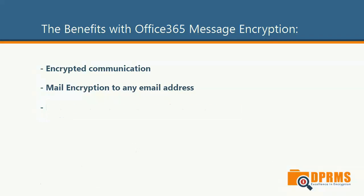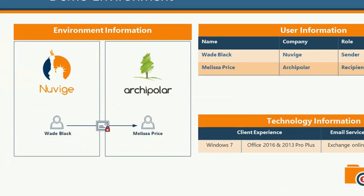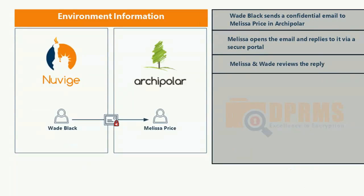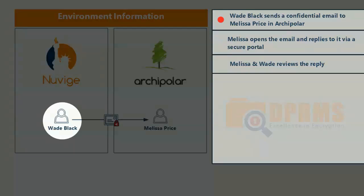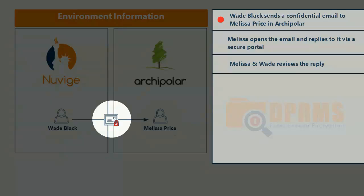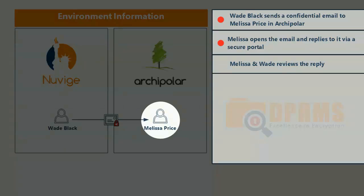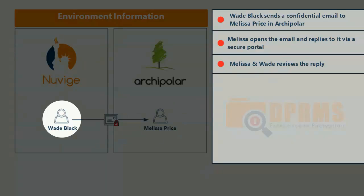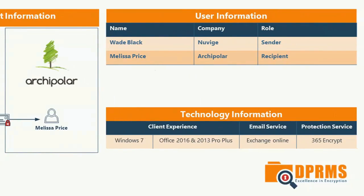Now let me show you how this works. We have prepared a demo environment with two companies: NuVage and Archipolar. In this scenario, Wade Black in NuVage will send an email to Melissa Price in Archipolar. The email will be sent unencrypted but will arrive encrypted, and Melissa Price will then open the encrypted email through a secure portal. Once open, she will reply and Wade Black will open her replied message. The technologies used: Windows 7, Office 2016 and 2013 Pro Plus, Exchange Online, and the protection service 365 Encrypt.